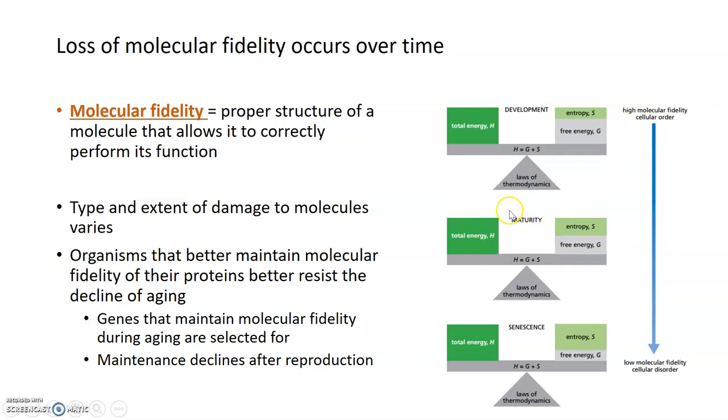In maturity, the total energy in the system remains the same, but the usable energy goes down. Entropy or randomness or disorder in the system starts to take over. Molecular fidelity, as well as cellular order, can decrease during maturity.